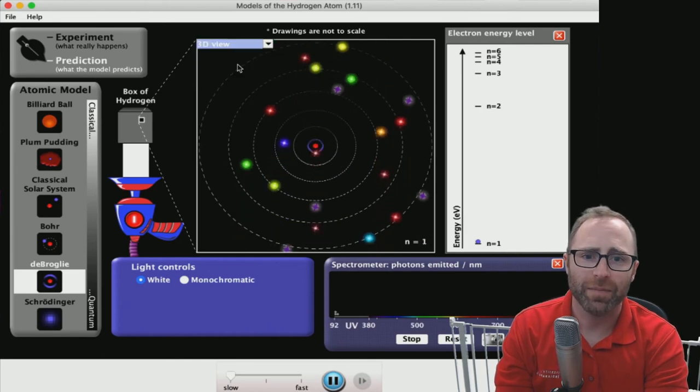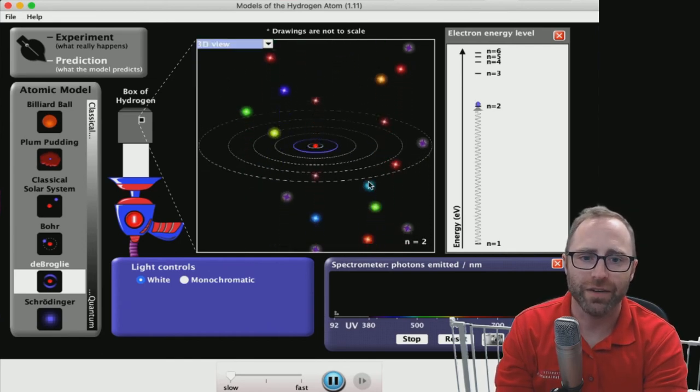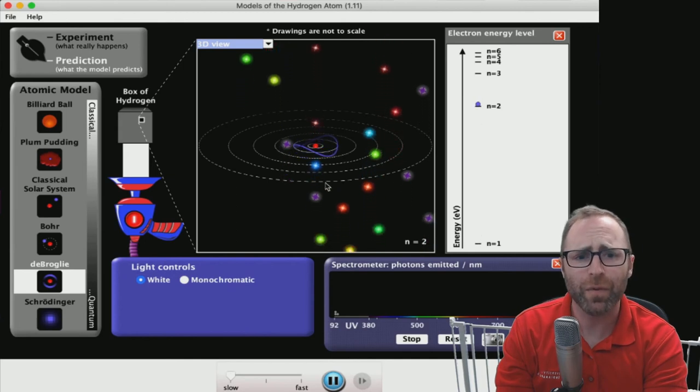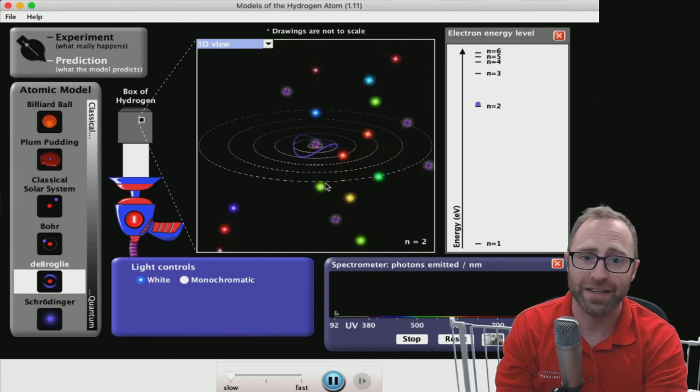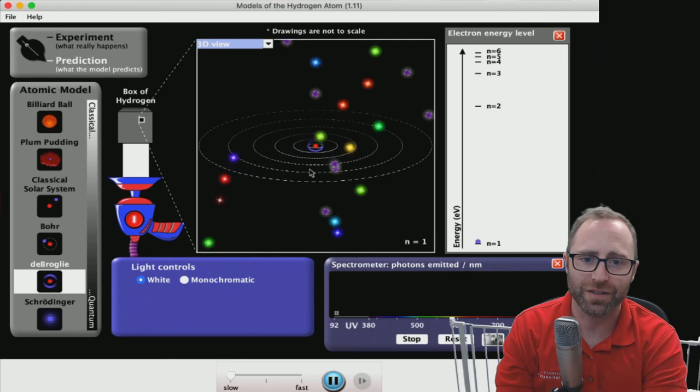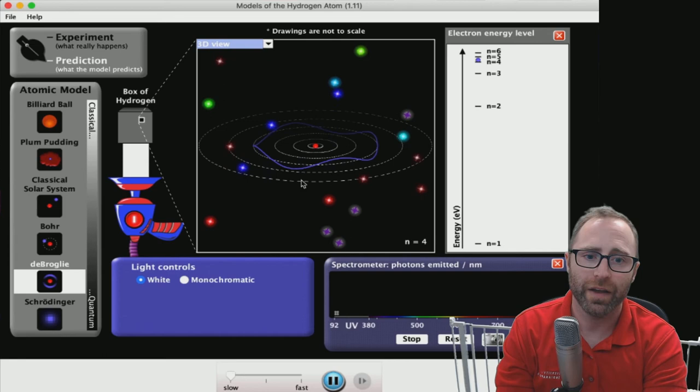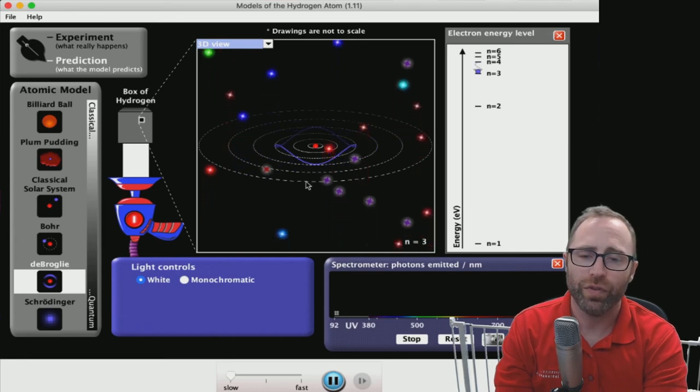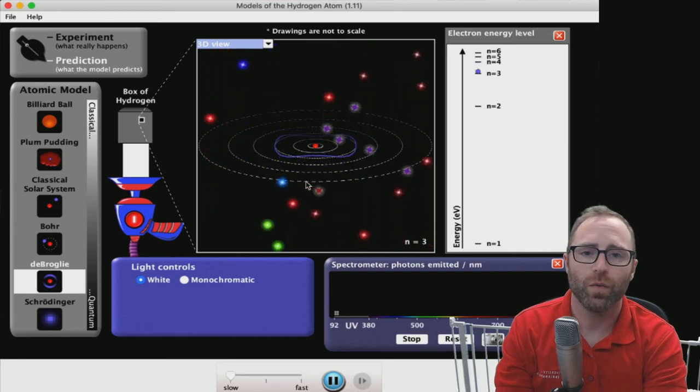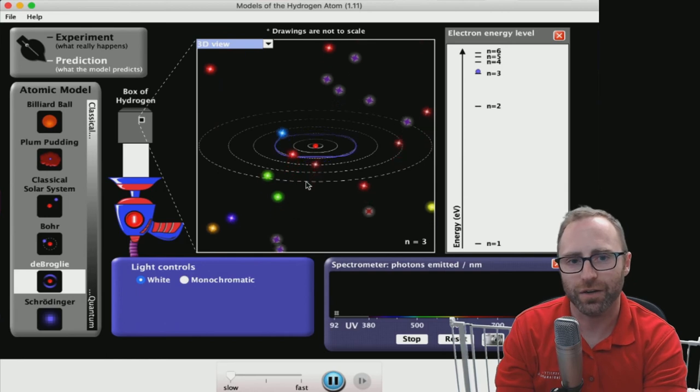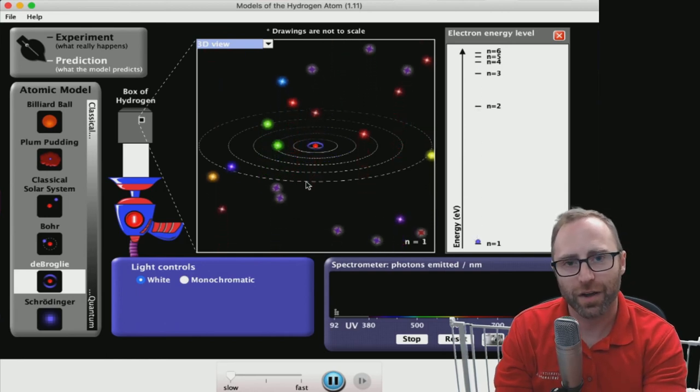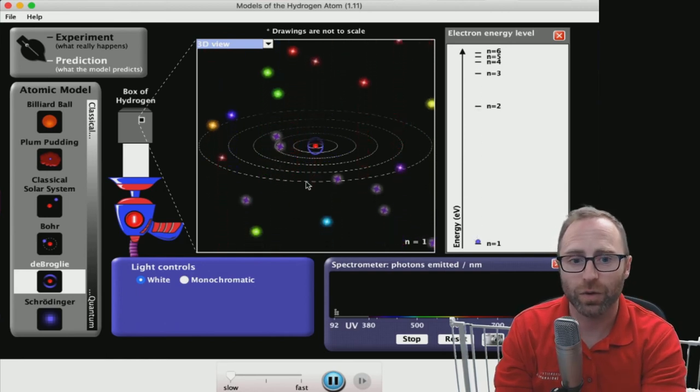One thing that might help us here is if we go to this 3D view. So now we can see the string as it is vibrating in space, the electron as it is vibrating, and then this wave-like property as we're going along. And you'll see that this wave is continuous. We are having a situation here where the electron is completing full waves.